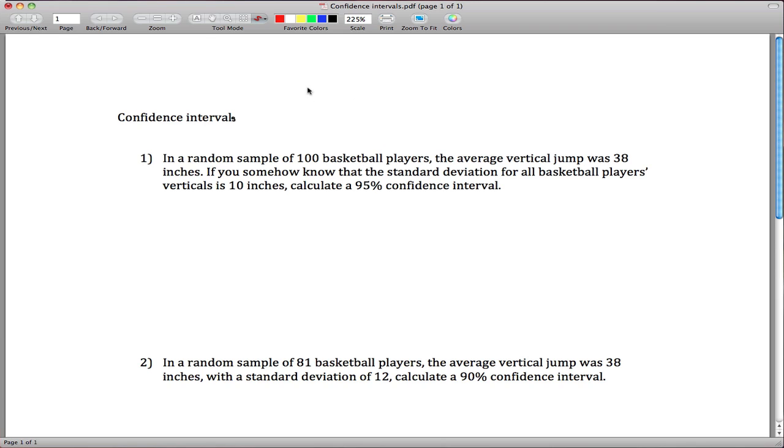The general idea with the confidence interval is that you want to make guesses about the mean, guesses about mu, but you don't know what mu is. In fact, you'll never know what mu is. So what you do is go out and get a sample, calculate the sample mean x bar, and then use that as your guess for mu.